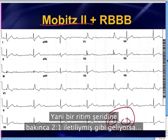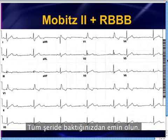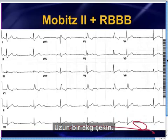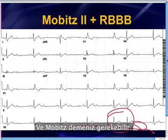So when you look at a rhythm strip and it looks like it's just 2-to-1, make sure to look at the entire rhythm strip. Get a long rhythm strip, because you might see a little area where it becomes 3-to-2 or some other ratio — and then you get to call it Mobitz something.